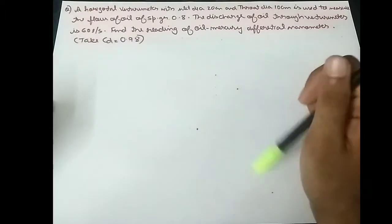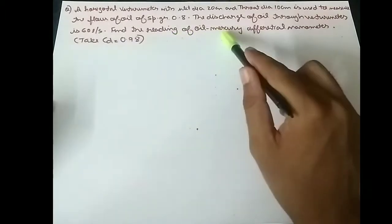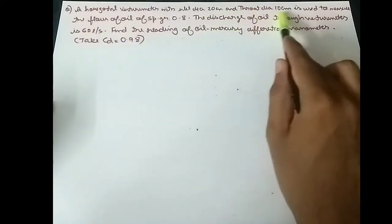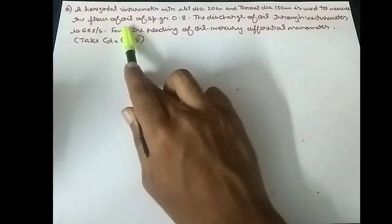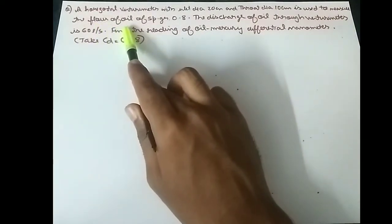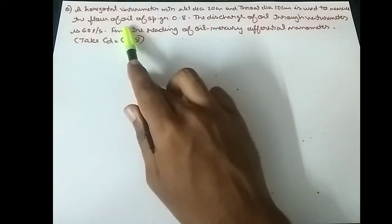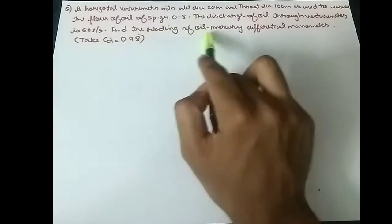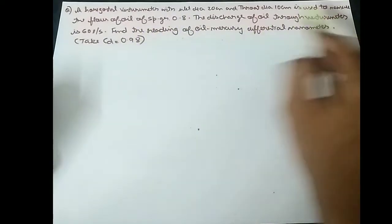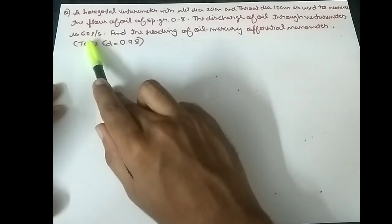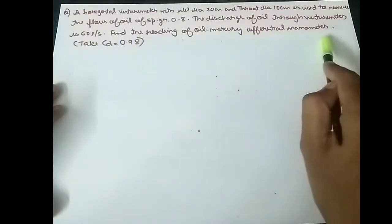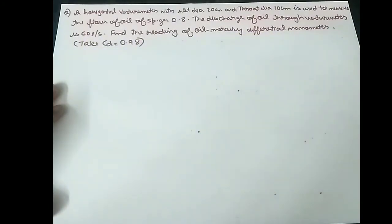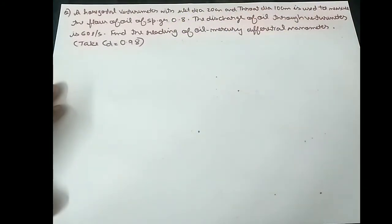The question: a horizontal venturi meter with inlet diameter of 20 centimeter and throat diameter of 10 centimeter is used to measure the flow of oil of specific gravity 0.8. The discharge of oil through the venturi meter is 60 liters per second. Find the reading of the oil-mercury differential manometer.